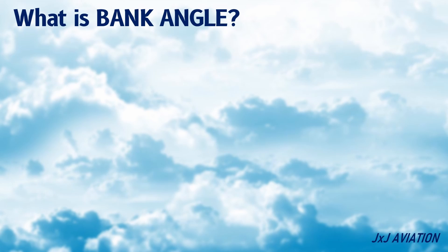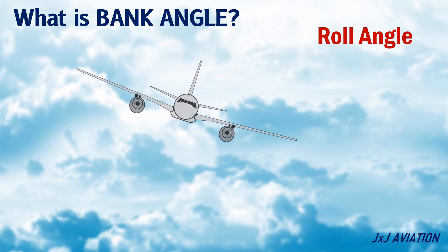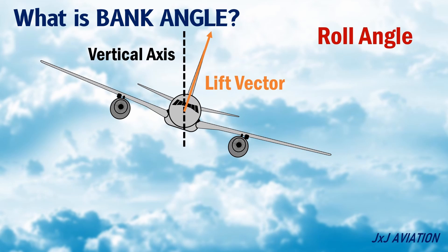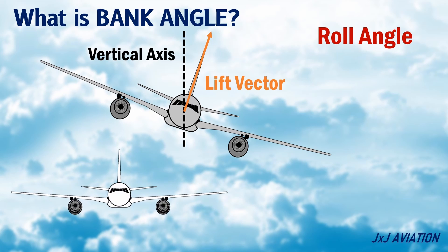What is Bank Angle? The bank angle is also known as the Roll Angle. This is defined as the angle between the lift vector and the vertical axis. When an aircraft is flying straight and level, the bank angle is zero.